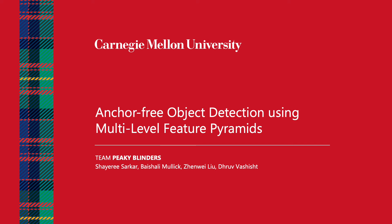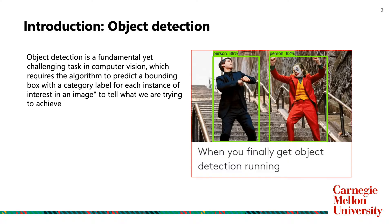Hi everyone, we are Team Peaky Blinders. I'm Shiree and this is our project on anchor-free object detection using multi-level feature pyramid networks. Object detection is a fundamental yet challenging task in computer vision which requires the algorithm to predict bounding boxes with a category label for each instance of interest in the image.